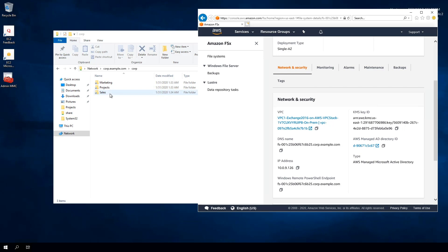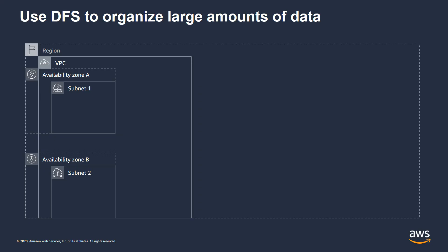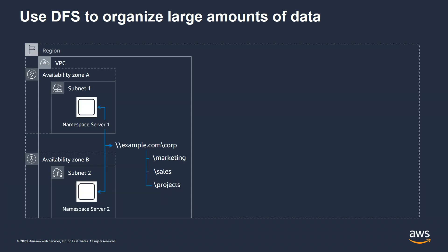Going back to the slides to show how this looks: with DFS, you typically set up namespace servers to host the namespace hierarchy, and you set up two of them for redundancy. In this diagram, we have one set up in each availability zone — namespace server one in availability zone A, and another in AZ B. Those host a namespace hierarchy, in this case example.com/corp.